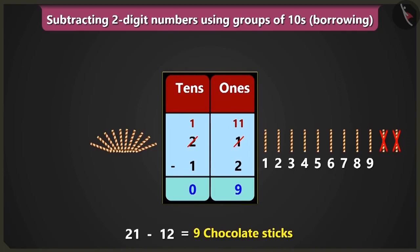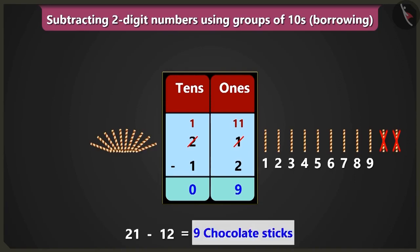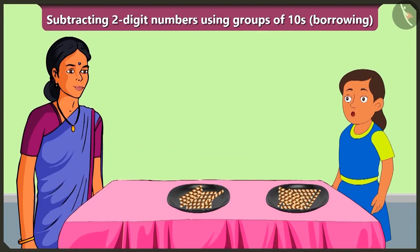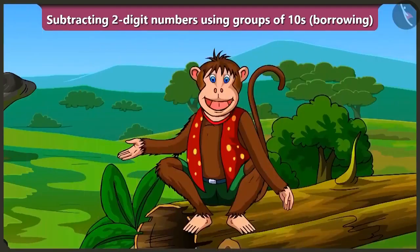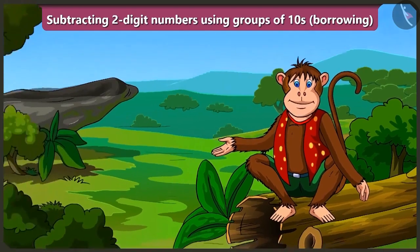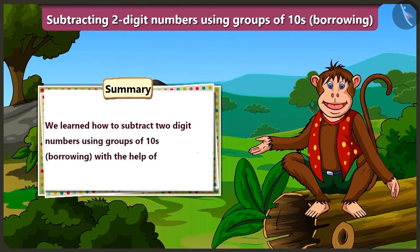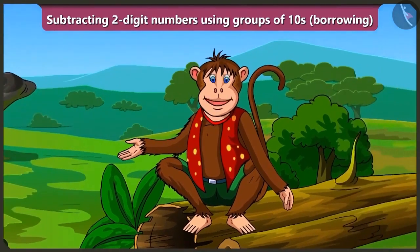So, Bunty would have 9 chocolates in his share. Well done, Bubbly — you gave the right answer. You take your chocolate sticks and study. Friends, today we learnt how to subtract 2-digit numbers using groups of tens borrowing with the help of an example. In the next video, we will learn how to subtract with the help of Bubbly's abacus without even writing.